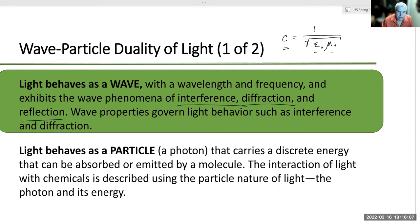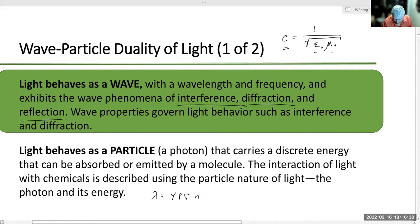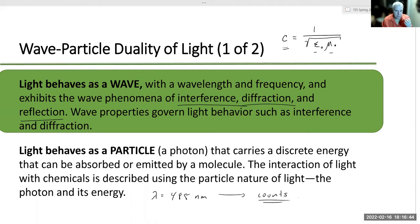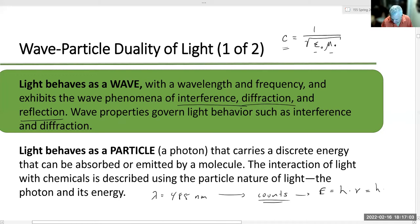There is one thing: when we measure light, it always shows up in packets of energy. If we're measuring blue light, say lambda equals 450 nanometers, we get counts on a detector—individual points on a piece of film that get exposed. Each count has an energy E equal to Planck's constant times the frequency of the light, or inversely proportional to the wavelength. So E equals hc over lambda.